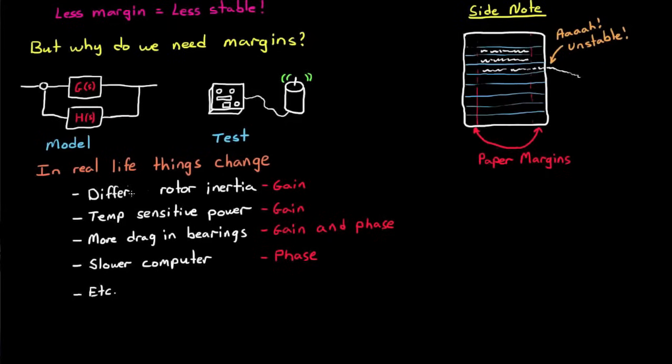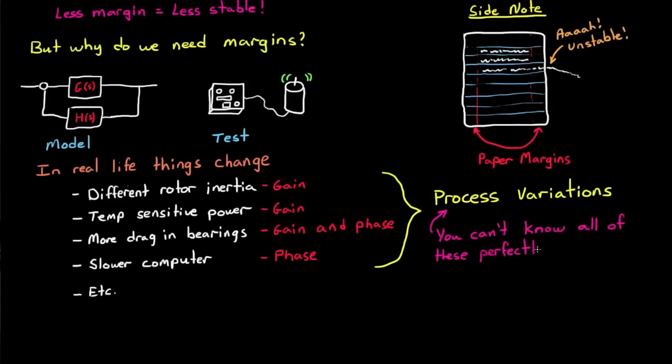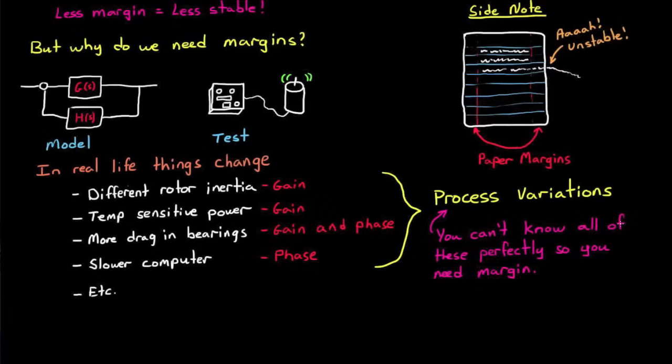All of these variations, plus others, can occur when you operate your controller in a real system. We call these process variations, and typically you want a design to be robust to them. You can't know your system perfectly, therefore you have to build in margin to account for it. So the bottom line is that you'll have uncertainty in how these process variations will affect your system. And the more uncertainty you have in your system, the more margin, or more stability, you should design in.